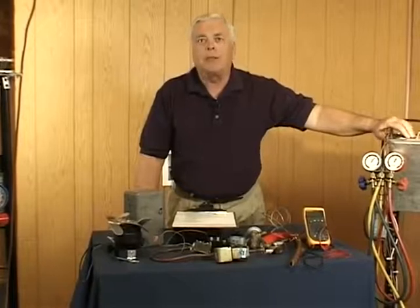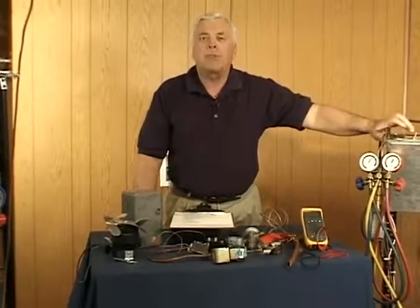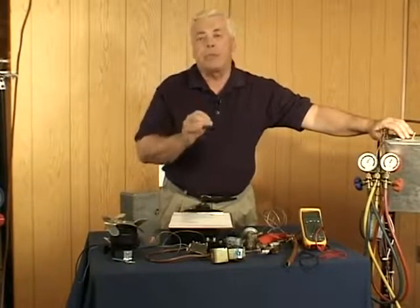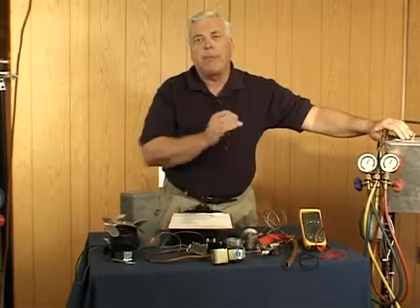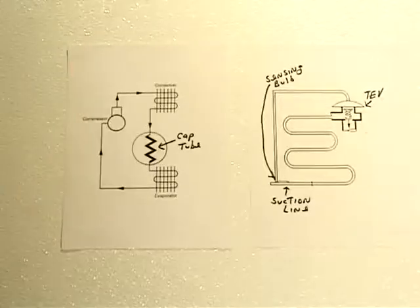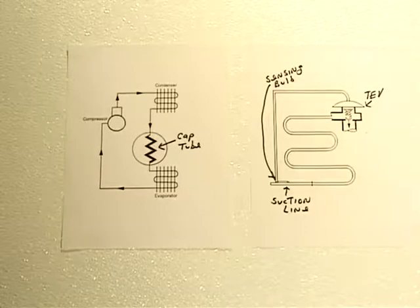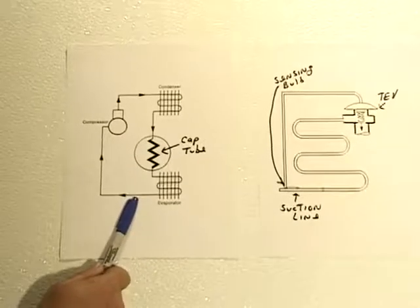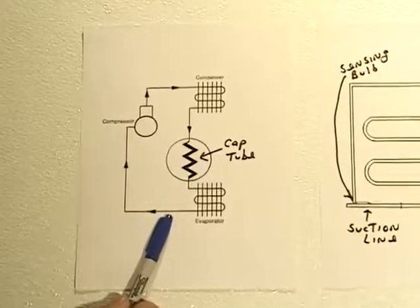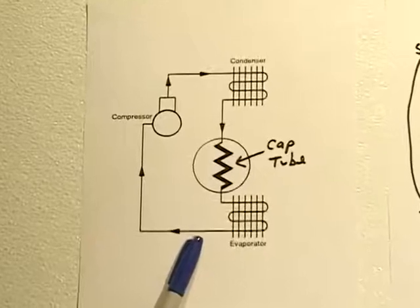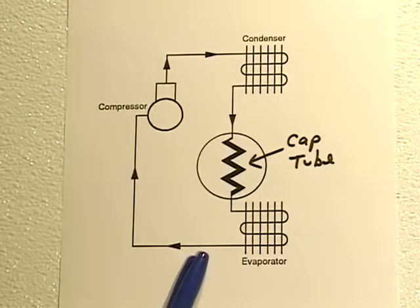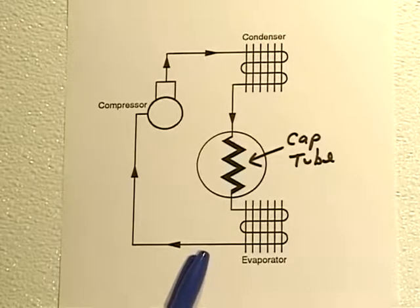We're going to get started with some graphics that compare capillary tube systems found in domestic refrigeration systems and thermostatic expansion valve systems found in commercial refrigeration. We'll look at the two types of refrigeration systems you may encounter in reach-in freezers and reach-in refrigerators. On the left is a simple capillary tube system that's been used for many years in domestic refrigerators and freezers, though it's also possible you may find this type of system in a commercial reach-in refrigerator or freezer.